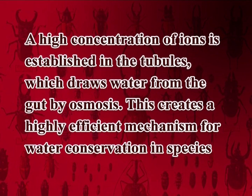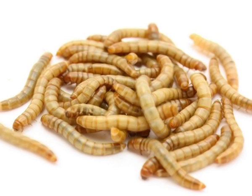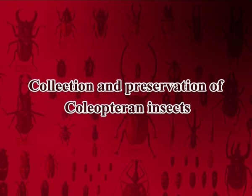Cryptonephridial condition in beetles is an arrangement of the excretory system in certain beetles in which the distal blind endings of the Malpighian tubules are held against the wall of the rectum by a perinephric membrane. A high concentration of ions is established in the tubules, which draws water from the gut by osmosis. This creates a highly efficient mechanism for conservation of water in species such as mealworms which feed on dry material.